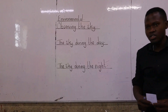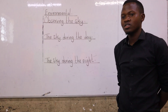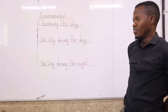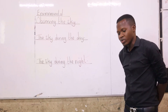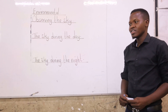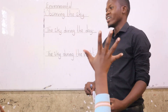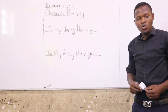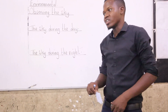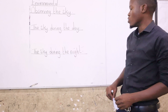Good morning, class. Good morning, Teacher Joseph. And how are you? I'm fine, thank you. How are you? We are fine, thank you. How many are happy today? We are happy today. Today we are going to learn something new, something very interesting. It's about the sky.